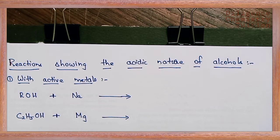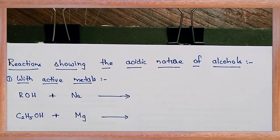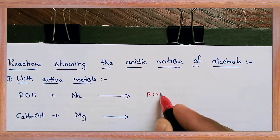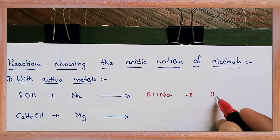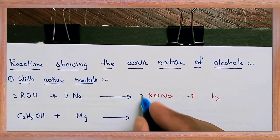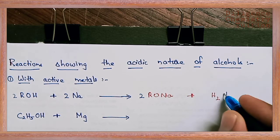Now, reactions showing the acidic nature of alcohols. The first example is reaction with active metals. Electropositive metals such as sodium, potassium, magnesium, and calcium react with alcohols to release hydrogen gas. For example: ROH + Na → RONa + H₂. Balancing: 2ROH + 2Na → 2RONa + H₂. Here, sodium alkoxide is formed and hydrogen gas is released.